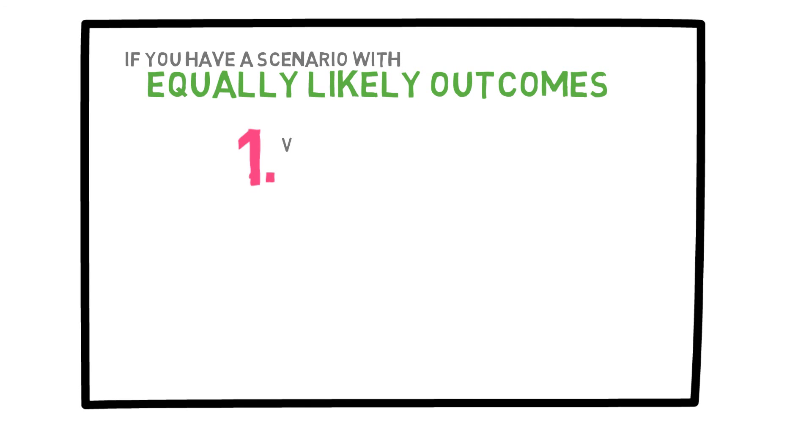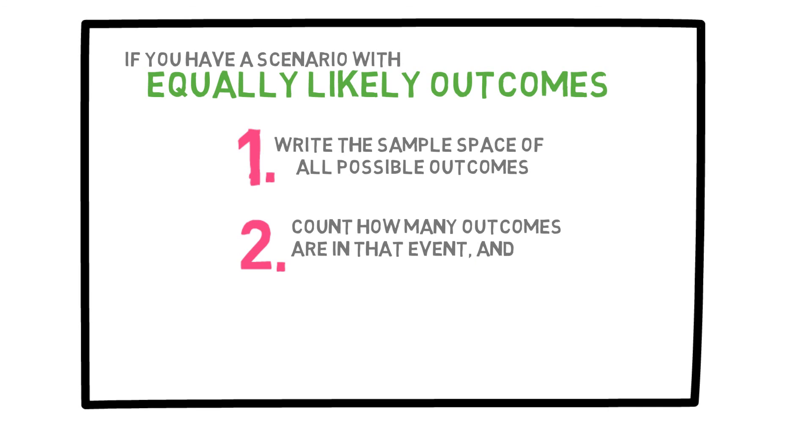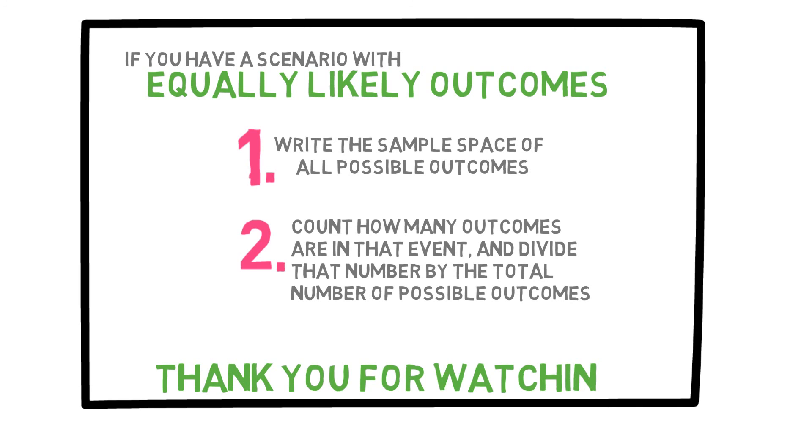To summarize, if you have a scenario like these ones with equally likely outcomes, then you simply follow these two steps. Write the sample space of all the possible outcomes, and then when you want to find the probability of an event, count how many outcomes are in that event, and divide that number by the total number of possible outcomes. Thank you for watching.